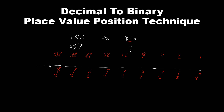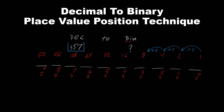Let's add one more place to the left. This would be position 9. 2 to the power of 9 is 512. And for these decimal values, you probably noticed every time we move to the left, it multiplies by 2, because binary is a base 2 system: 1, 2, 4, 8, 16, 32, 64, and so on. Now we can go ahead and convert 357 decimal to binary using the place value position technique.